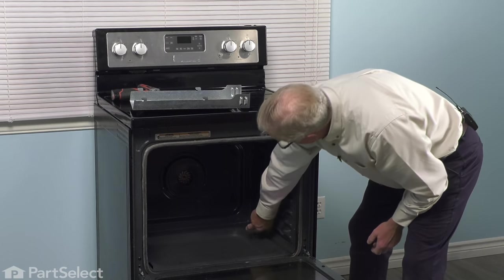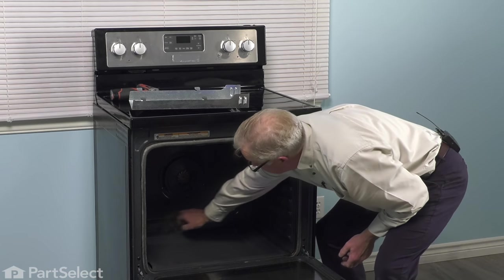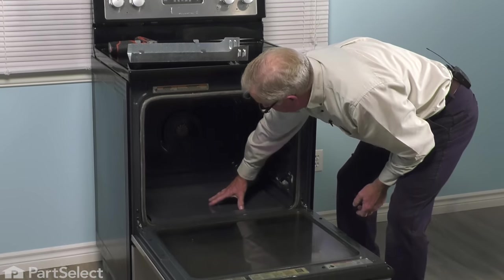With the racks removed, we're next going to remove two Phillips screws at the back of that oven bottom to remove that and we can access that element.